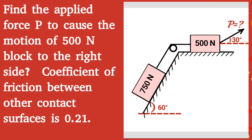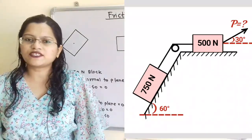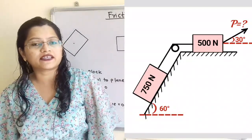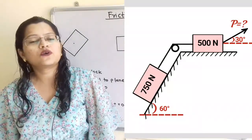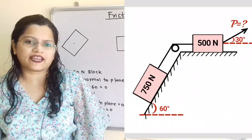Given question: find the applied force P to cause the motion of 500 N block to the right side. We have to find out the value of P, which is inclined at 30 degrees to the horizontal, to cause the motion of the 500 N block towards the right hand side.